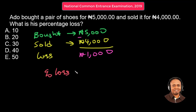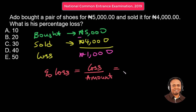This is the percentage sign. The percentage loss is the loss over the initial amount — the amount you bought it for, which is 5,000 Naira.